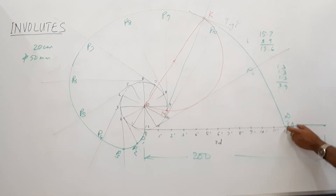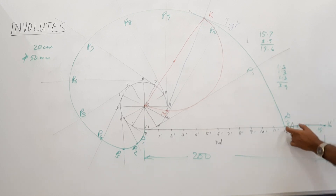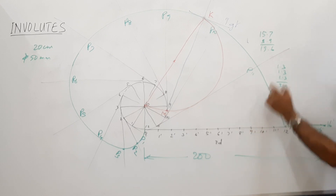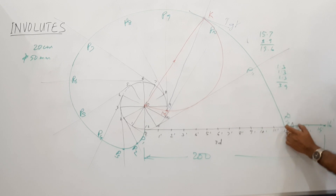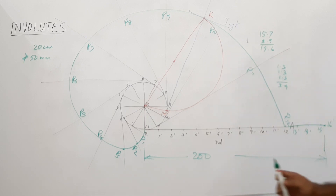Take this division — don't take 1.3 exactly, take the actual division. Place it once, place it twice, place it thrice, then a small distance will remain. That completes 20 cm.